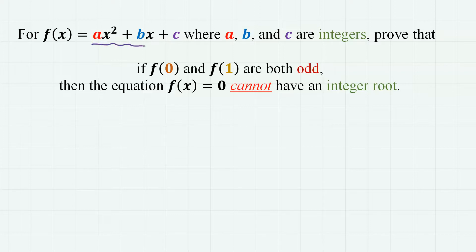For f(x) given as ax squared plus bx plus c, where a, b, and c are integers, we have to prove that if both f(0) and f(1) are odd, then the equation f(x) equals 0 cannot have an integer root.